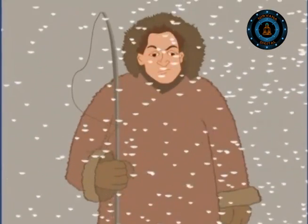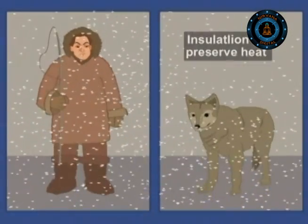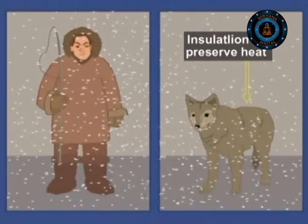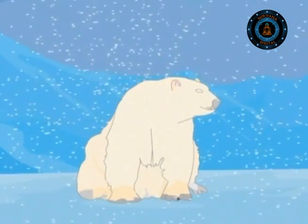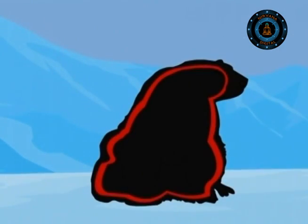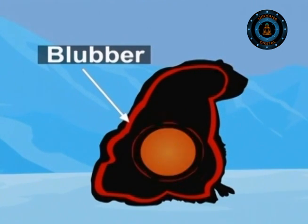Just as we humans wear thick clothes to keep warm in winter, animals too have layers of insulation around their body to preserve heat. Polar bears have a thick fur coat and also a layer of fat or blubber. The blubber acts mainly as a storehouse of energy for the tough period when food is hard to find. Along with providing energy, the blubber also helps the bear keep heat trapped inside its body.